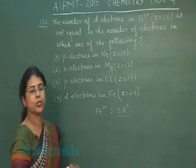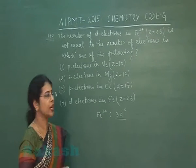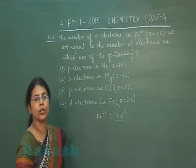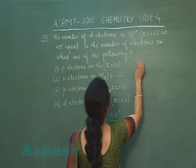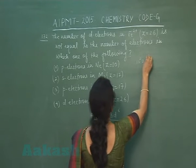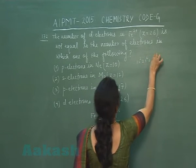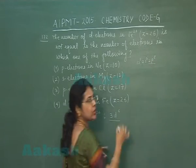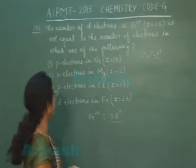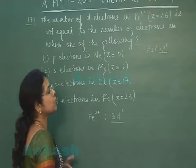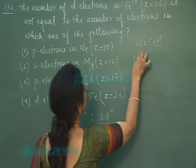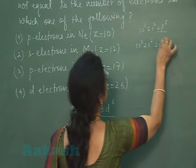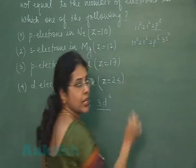Now we need to find which option does not have 6 electrons. Option 1: p-electrons in Neon — configuration is 1s², 2s², 2p⁶, so p orbital has 6 electrons. Option 2: s-electrons in Magnesium — configuration is 1s², 2s², 2p⁶, 3s², giving 2+2+2 = 6 s-electrons.